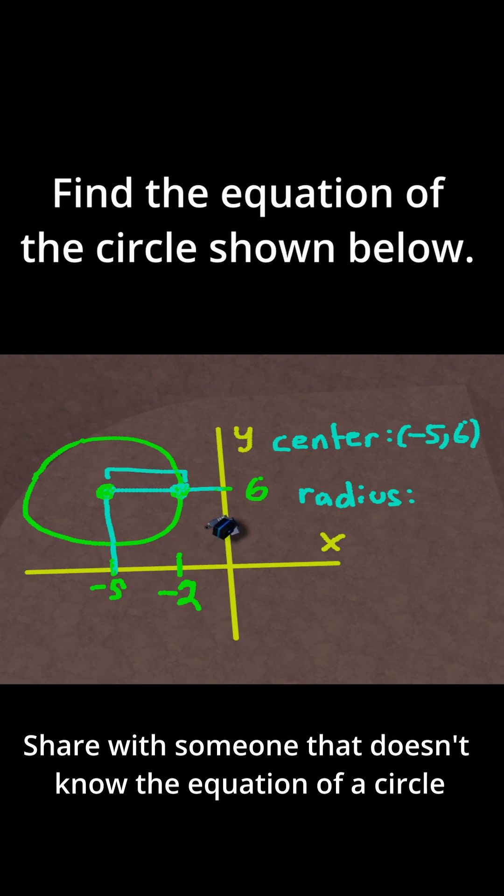Well we don't change our vertical distance. We're at y equals six for both those points. So we only move horizontally. And we go from minus five to minus two. That's a distance traveled of three units. Therefore the radius is just three units.